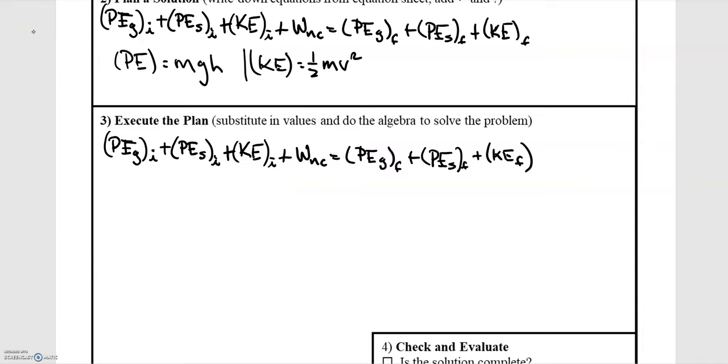Now that we have a plan, we can execute our plan. We've already talked about there's no springs in this problem, so the initial and final spring potential energies are going to be zero. The next step, what we've already talked about, is that we only have conservative forces in this problem, so the work done by non-conservative forces is just zero.